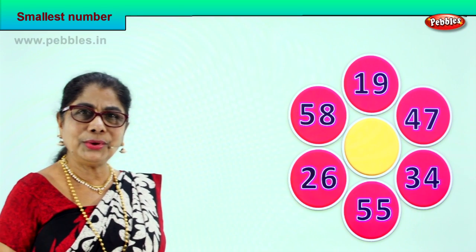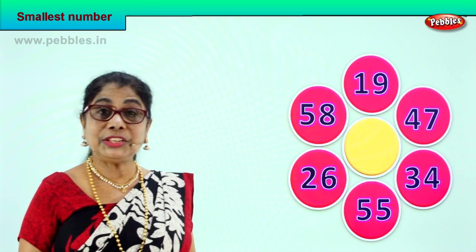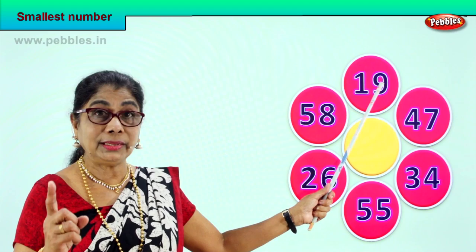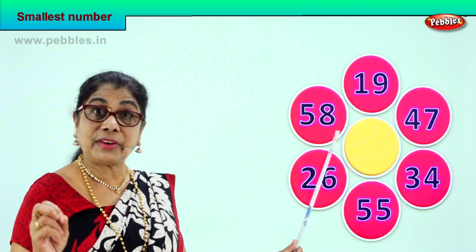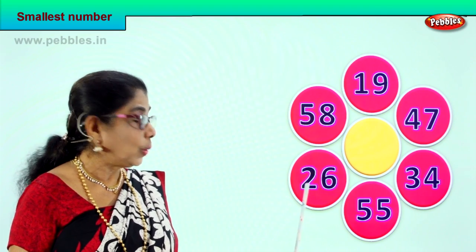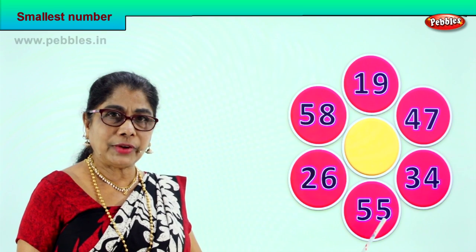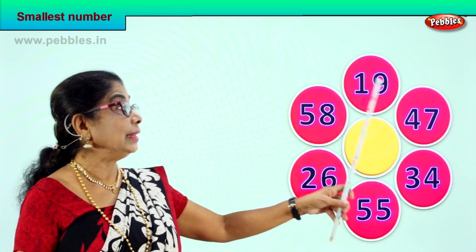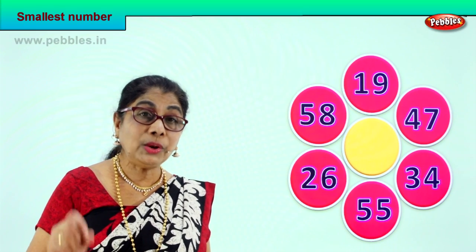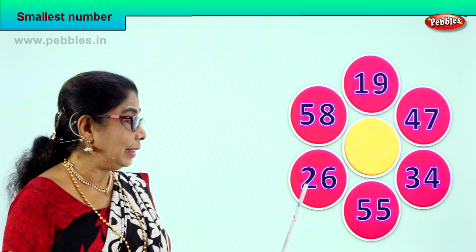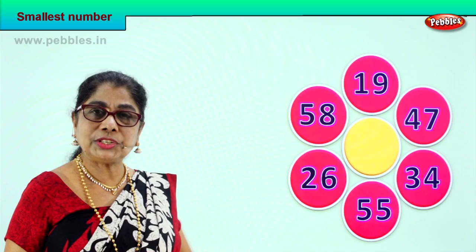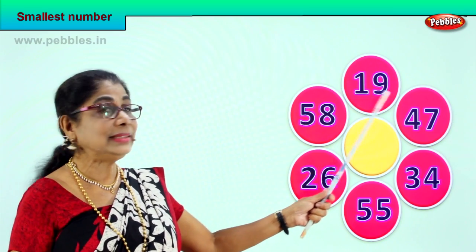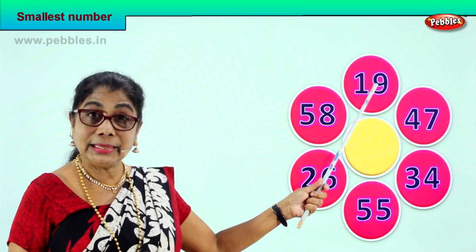Look, there are six numbers here. In each number let's look at the tens place. 19 has one in the tens place, 58 has five in the tens place, 26 has two tens, 55 has five tens, 34 has three tens, and 47 has four tens. We are looking at the tens place for the least — which number has the least number of tens?